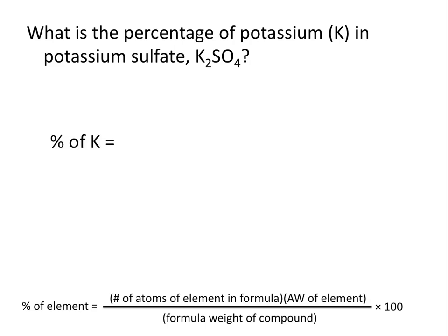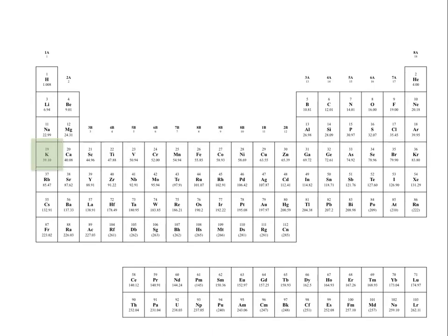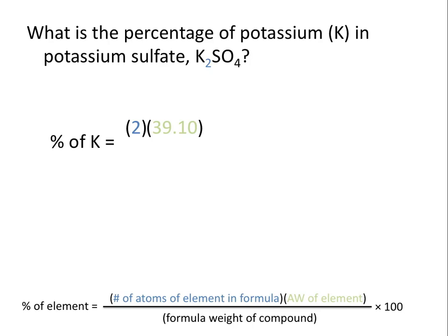So the percent composition of potassium will be equal to two, because there are two atoms of potassium in each molecule of K2SO4, multiplied by the atomic weight of that element, which we can determine from the periodic table. The atomic weight of potassium is 39.1.